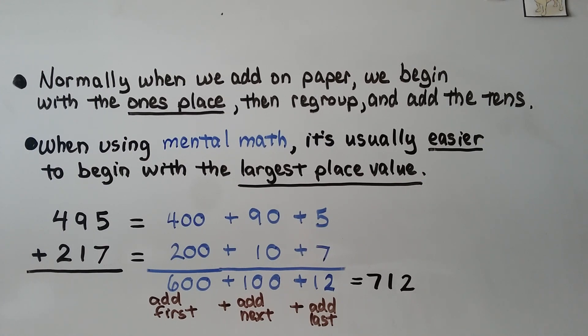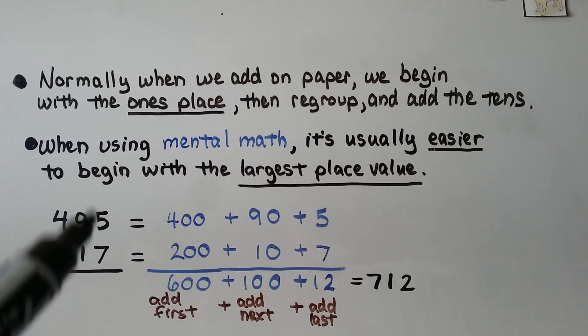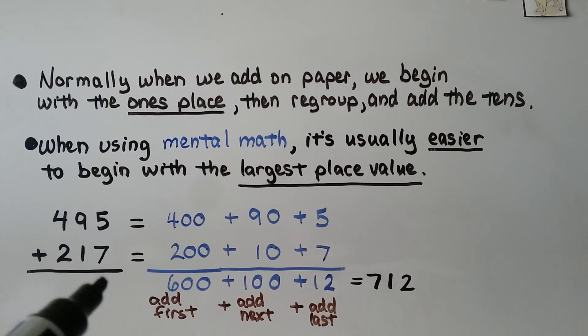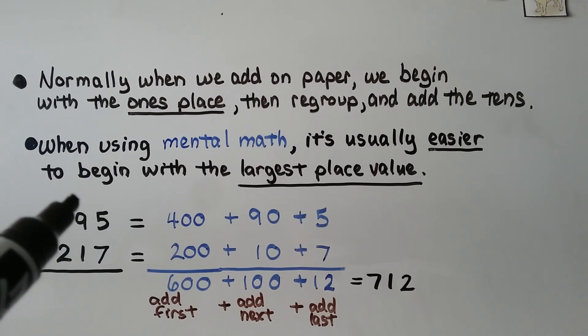Normally, when we add on paper, we begin with the ones place, then regroup and add the tens, and then go to the next place value. So normally, we would start here on paper and add the 5 plus the 7 and regroup.